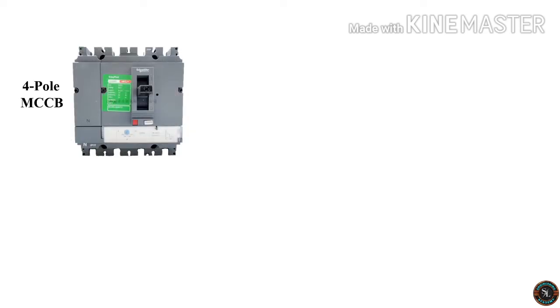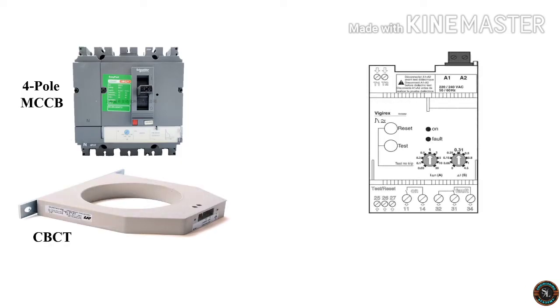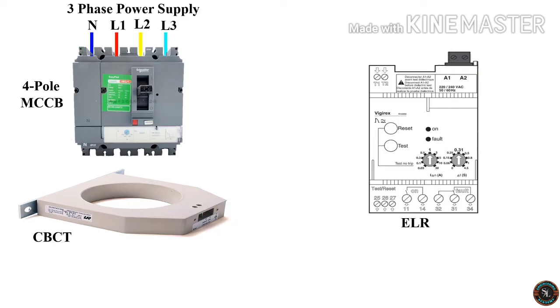Let's see the circuit diagram of ELR. It includes a four pole MCCB, or four pole molded case circuit breaker, a core balance current transformer or CBCT, and the earth leakage relay or ELR itself. The system connects neutral line, Line 1, Line 2, and Line 3 from a three phase power supply.